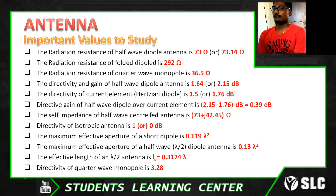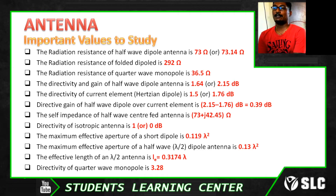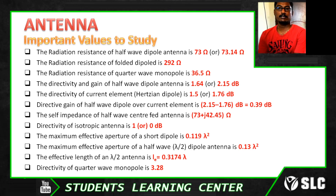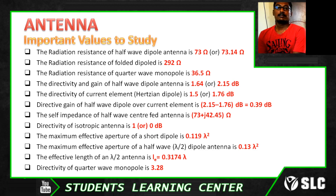The directivity of a quarter wave monopole is 3.28. These are the important values for 1-mark questions. If you like, share and subscribe. In this video, we will see the values from previous year Polytechnic exam and Lecturer exam questions with solutions and topic explanations. Thanks for watching.